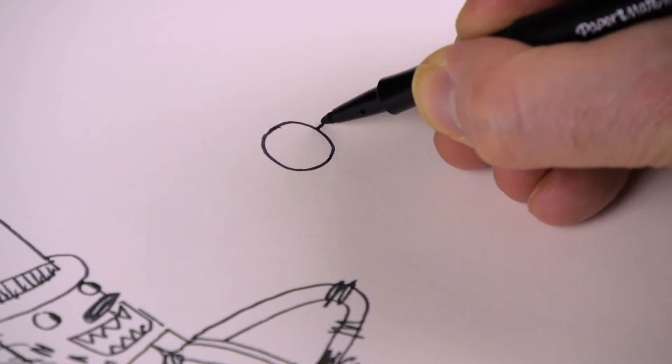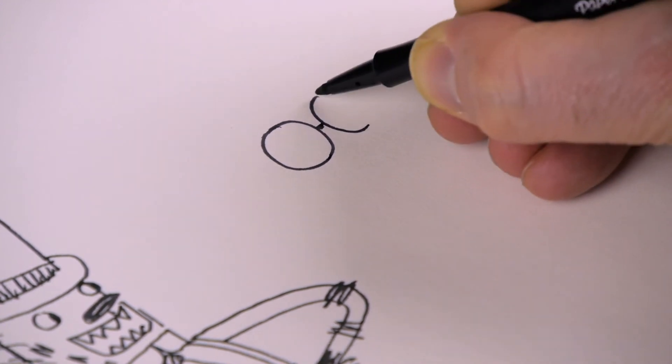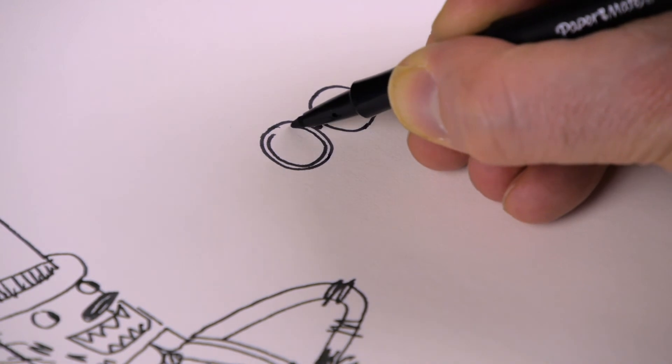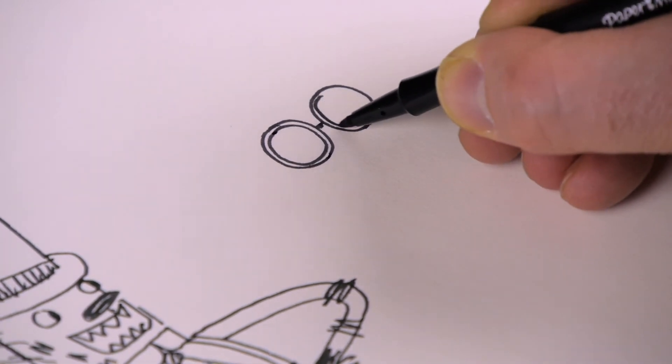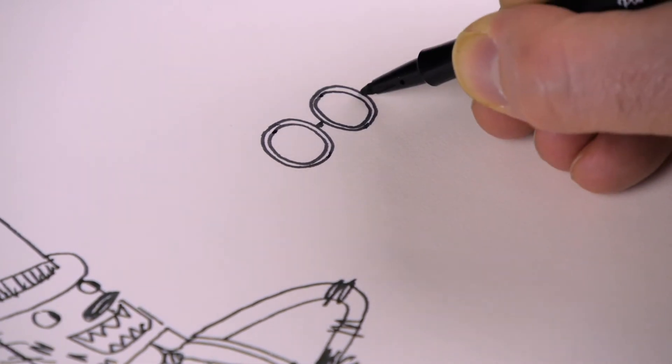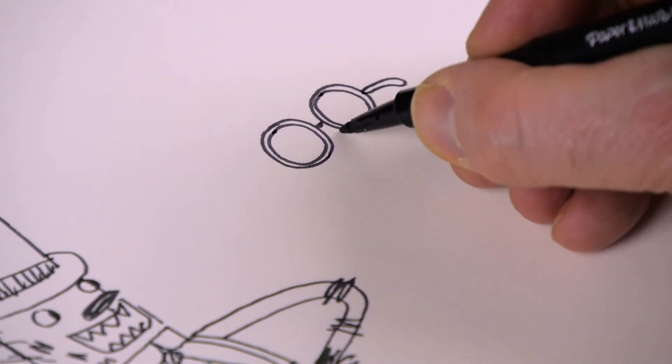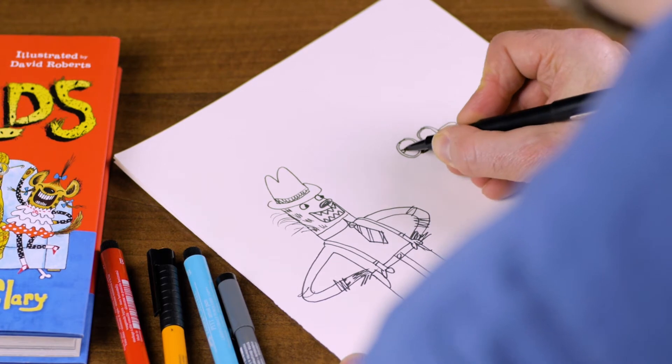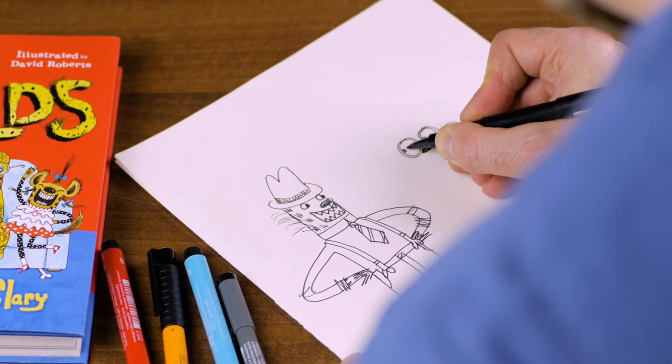Mrs. Bold likes to wear nice big sunglasses. Big round sunglasses. This is quite tricky to draw. There we go. That's the arm of the sunglasses. And we put her nose in like this. And we'll have her eyes looking this way towards Mr. Bold.